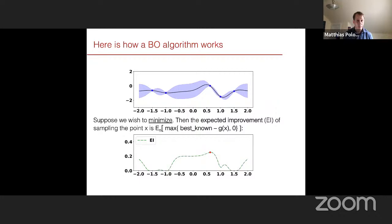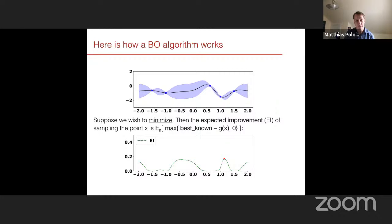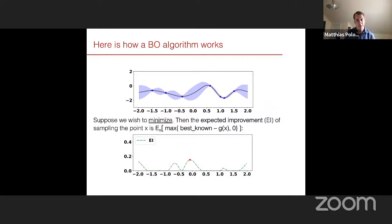We take the observation that maximizes the expected improvement criterion. In this case we were unlucky and sampled a point with worse performance. We update the posterior, recompute the maximum of EI, and sample again — this time around 1, getting a new optimum. We update again, find another optimizer using a gradient-based optimizer or genetic algorithm, sample again, and continue iterating this process of updating the posterior and sampling, until we run out of samples or find a point that is good enough.